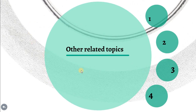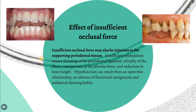Another related topic is the effect of insufficient occlusal forces. Insufficient occlusal force may also be injurious to supporting periodontal tissue, because insufficient stimulation causes thinning of the periodontal ligament, atrophy of fibers, osteoporosis of the alveolar bone, and reduction in bone height. Hypofunction can result from open bite, absence of a functional antagonist, or unilateral chewing habits. These conditions should be corrected — missing teeth should be replaced and open bites corrected orthodontically.